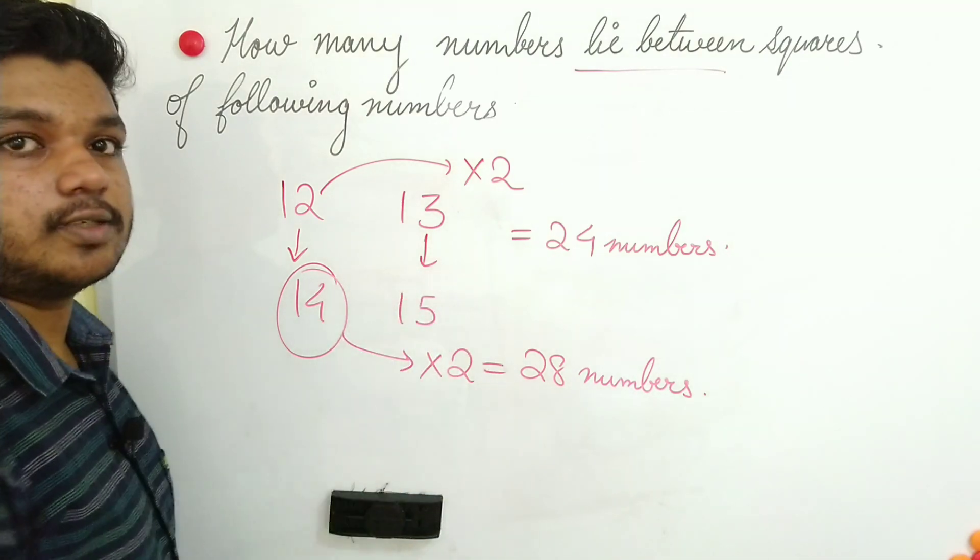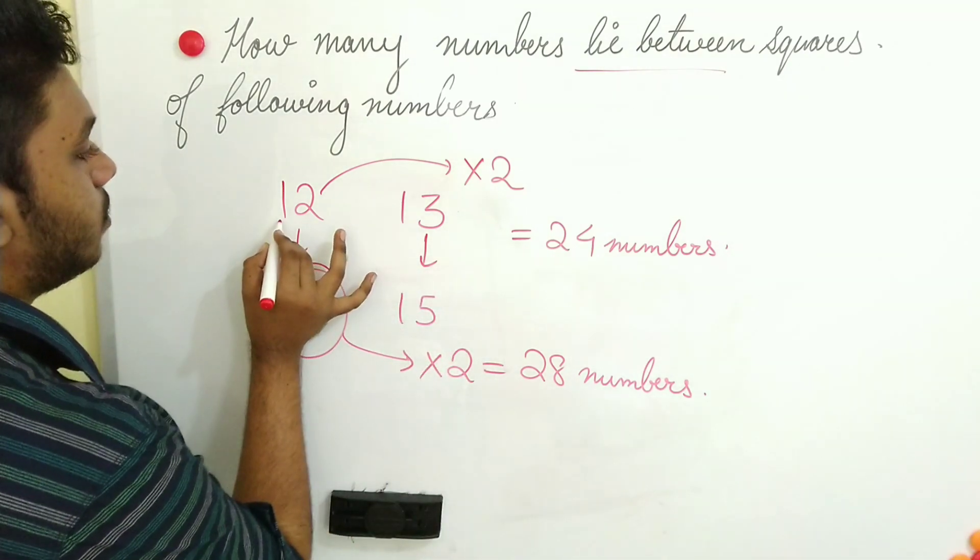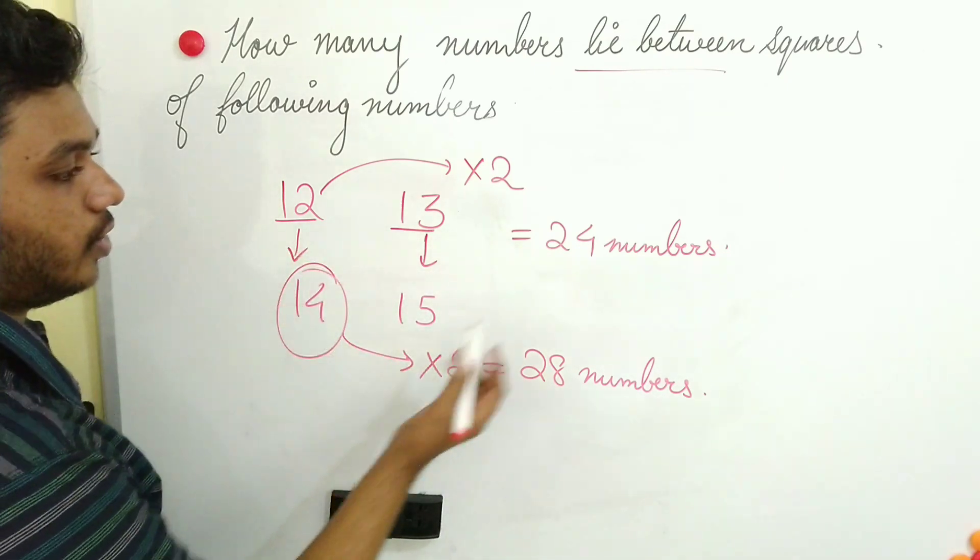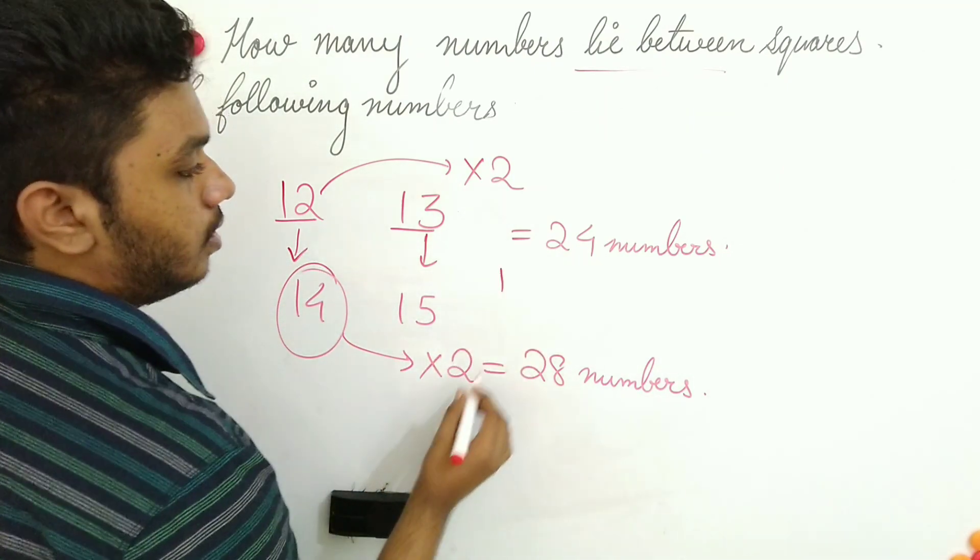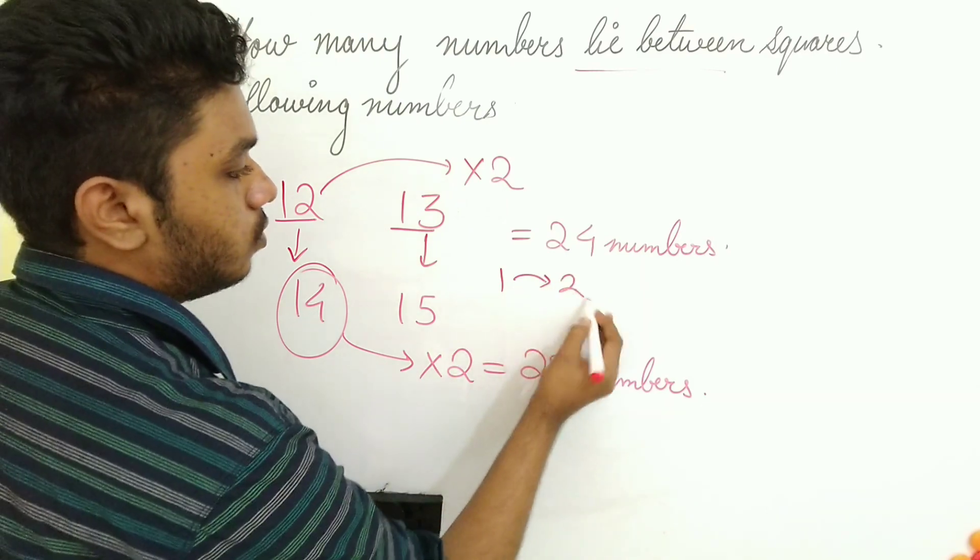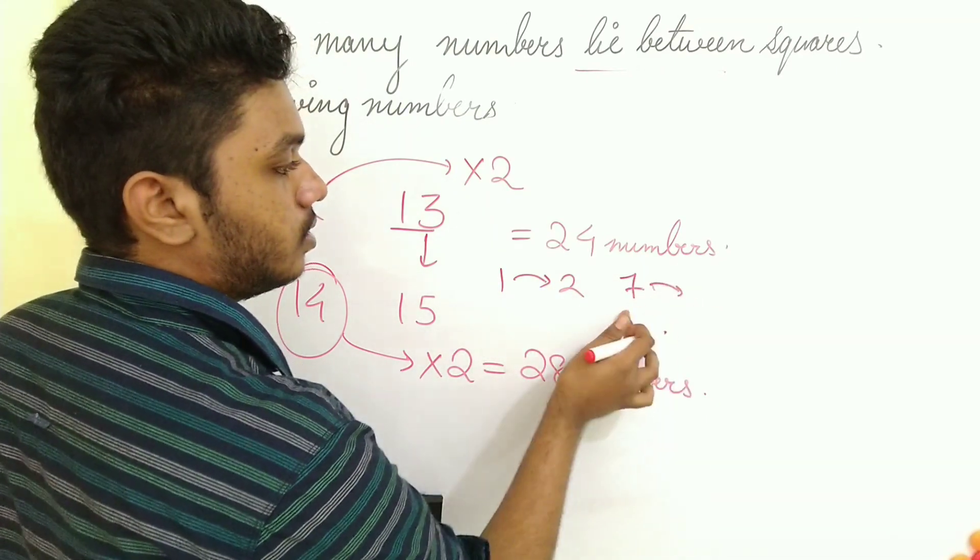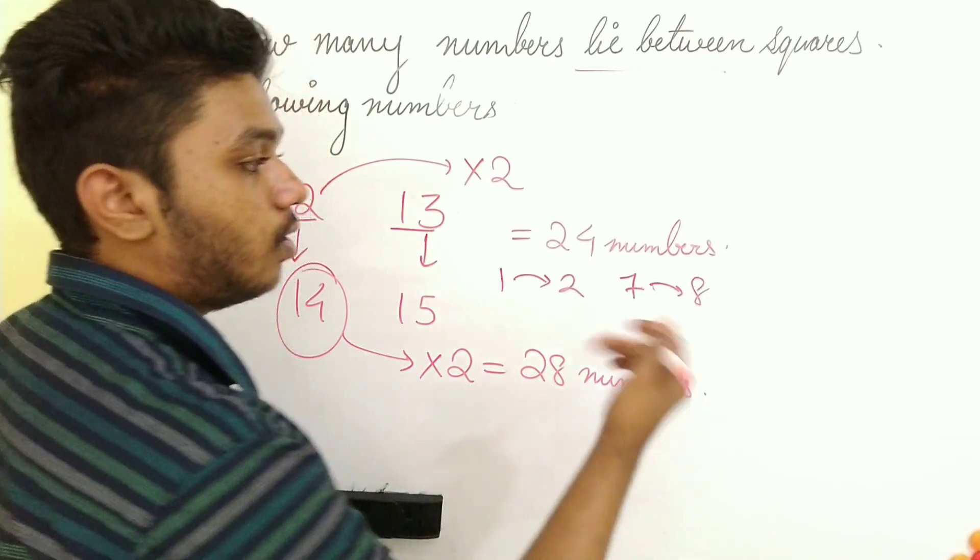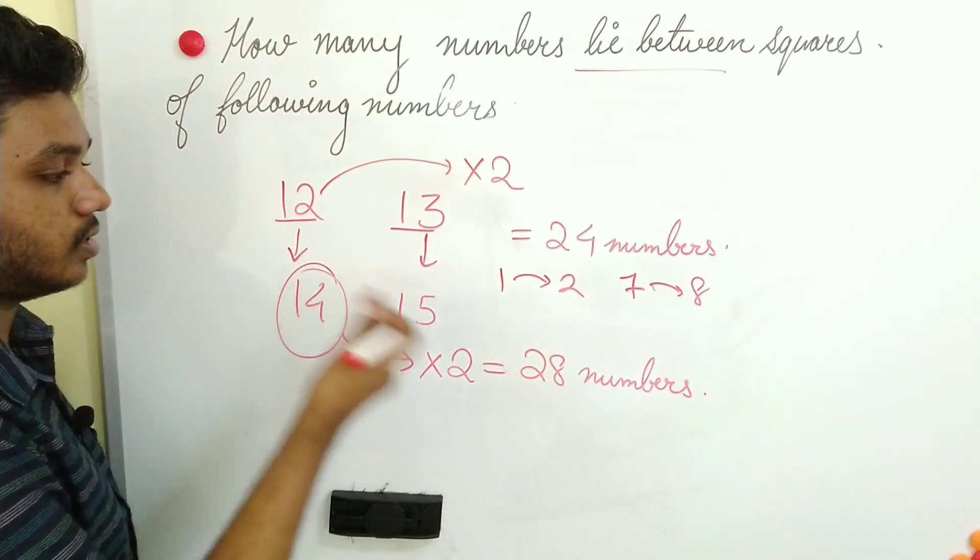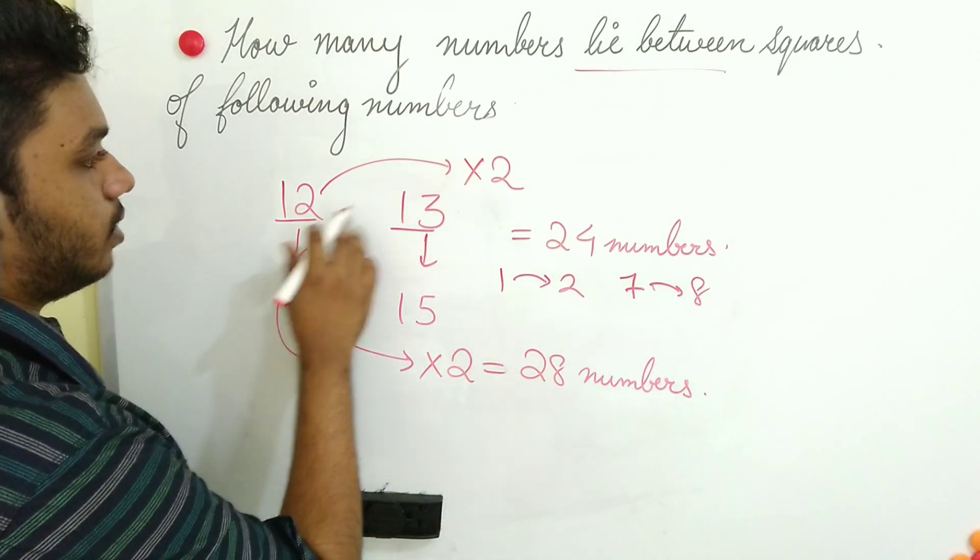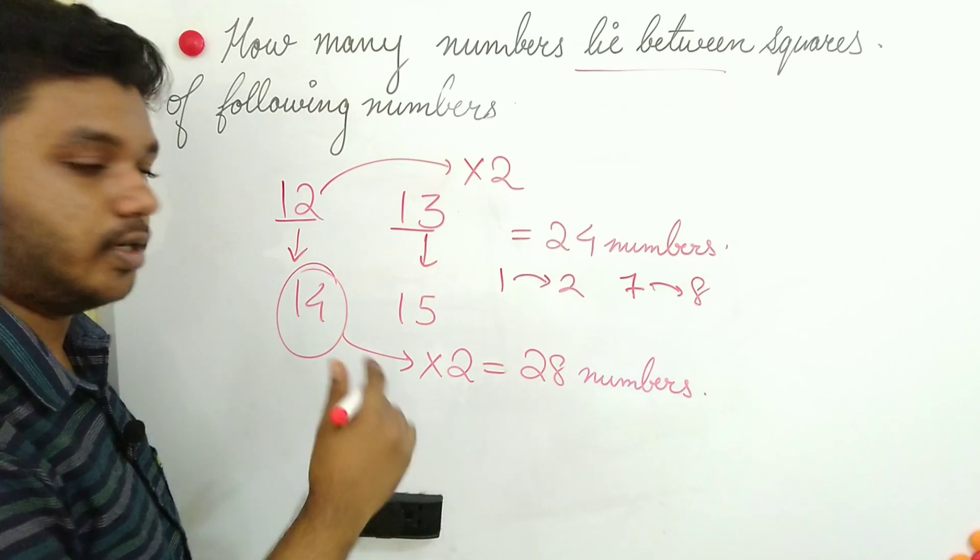But there is one condition over here. That means you have to observe 12 and 13 are consecutive numbers. What is the meaning of consecutive? It is nothing but, suppose 1, what is the next to 1? It is 2. So these two are consecutive numbers. Suppose 7, next to this is 8. 7 and 8 are consecutive numbers. 14, what is the next number? 15. These two are consecutive numbers. If I take 12, next number is 13. It is consecutive numbers.